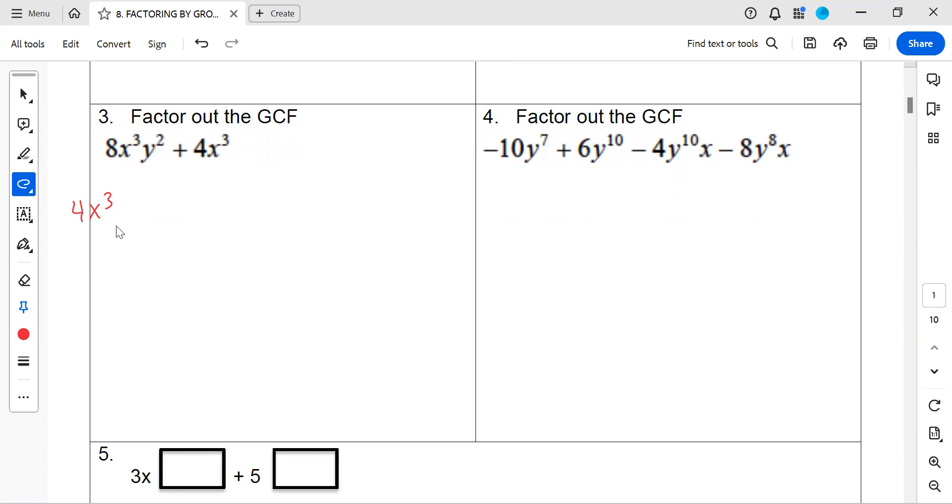No, so I'm definitely not going to use y as my GCF. So I open my parentheses and I'm dividing by 4x³ each term. 8 divided by 4 gives me 2. The x³s cancel out, I'm left with y². The 4s cancel out to give me a 1, x cubes cancel out to give me a 1, so I'm gonna have plus 1.